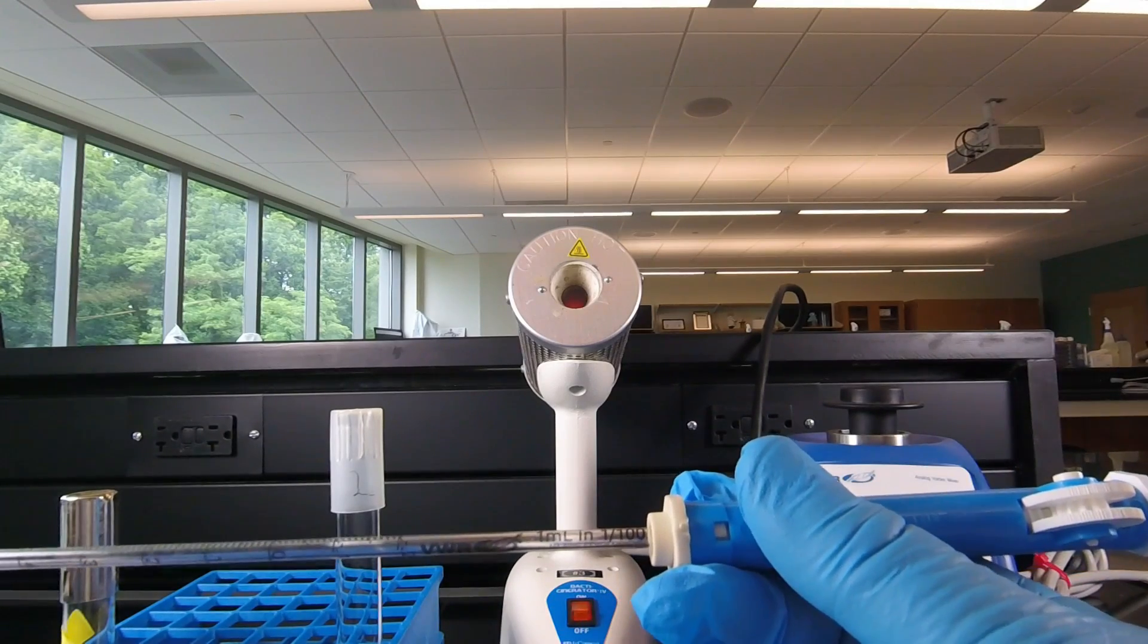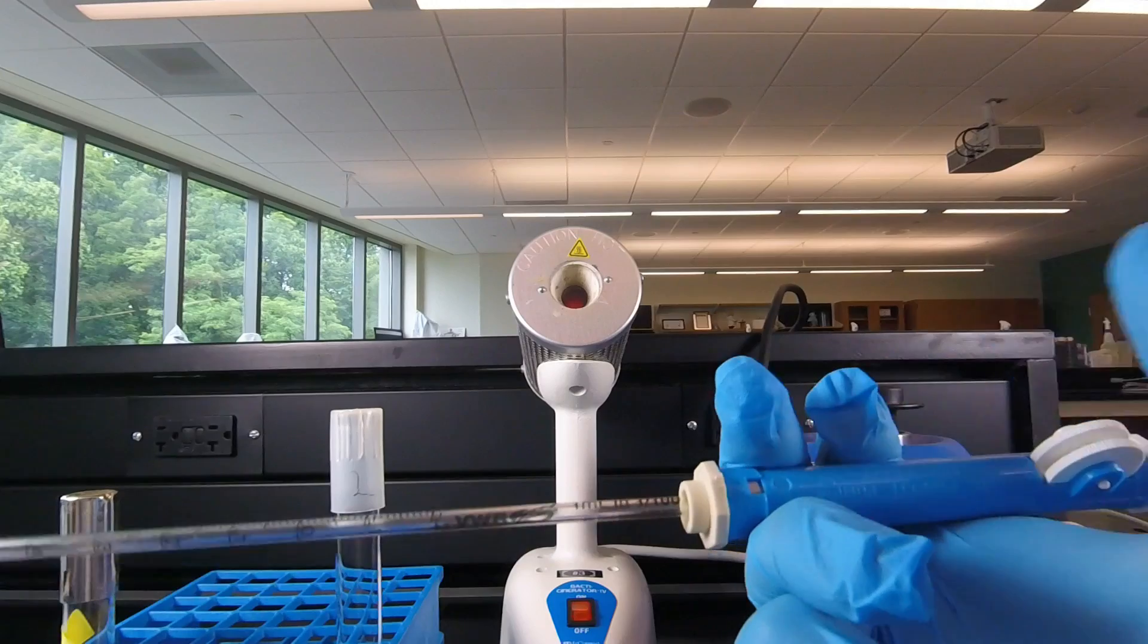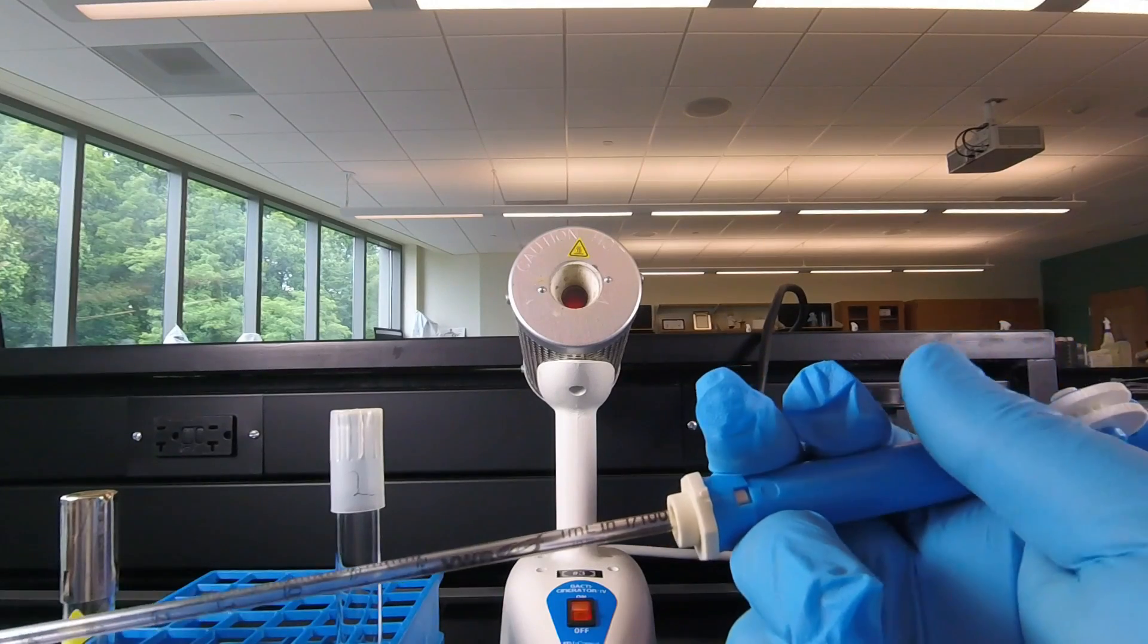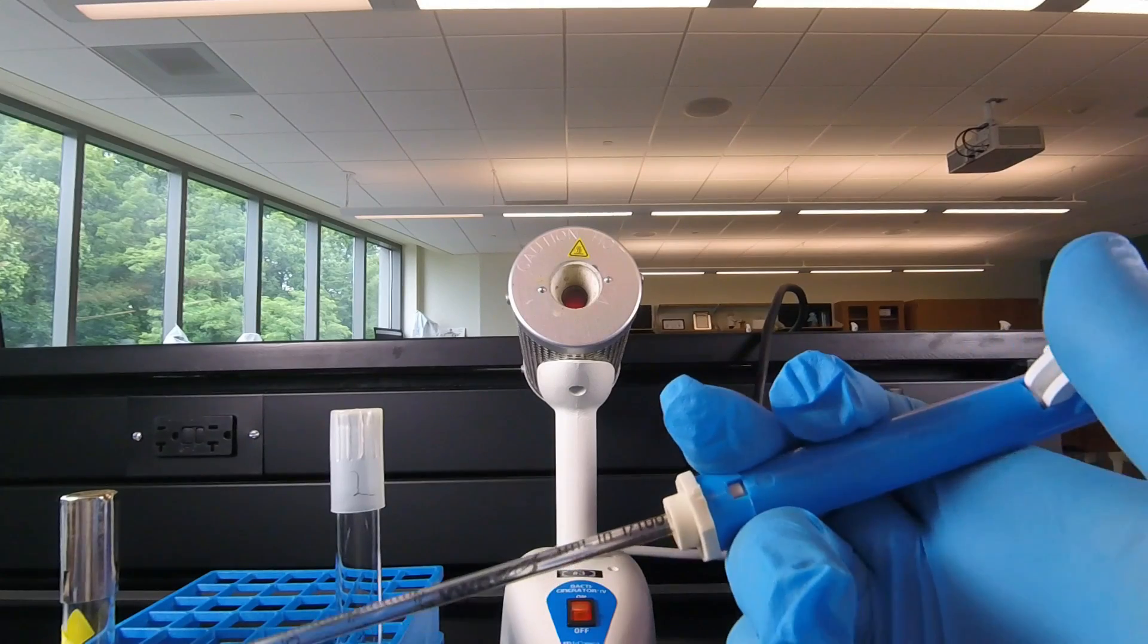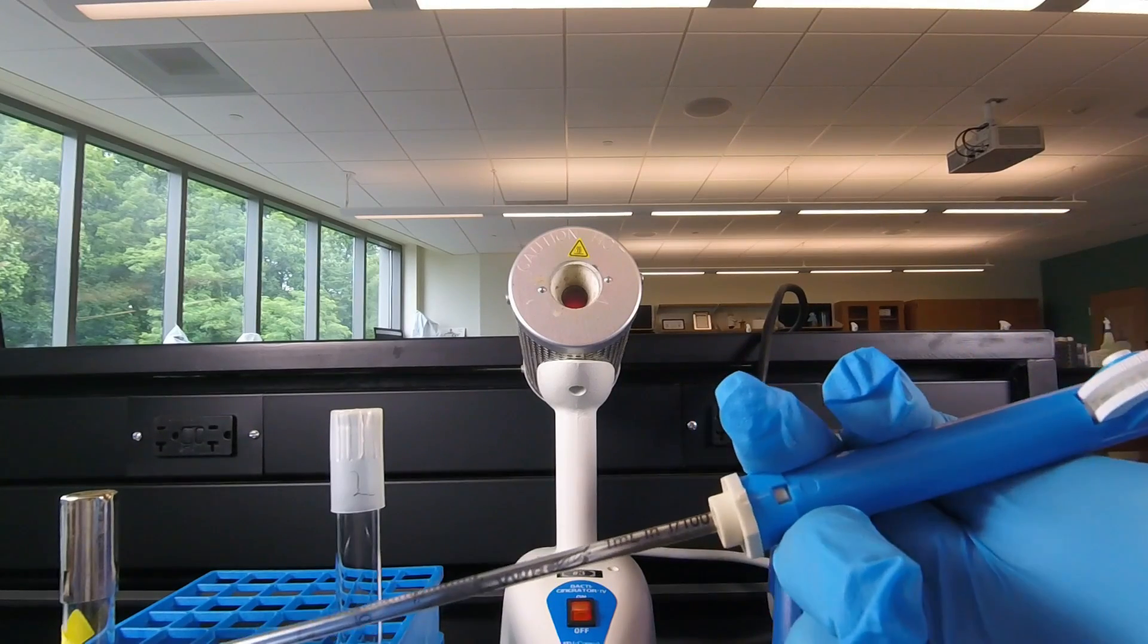...the one we use for a one mill pipet, and remember when you turn the knob towards you that's going to suck the liquid up, and when you push the knob up like that, that's going to dispense it.